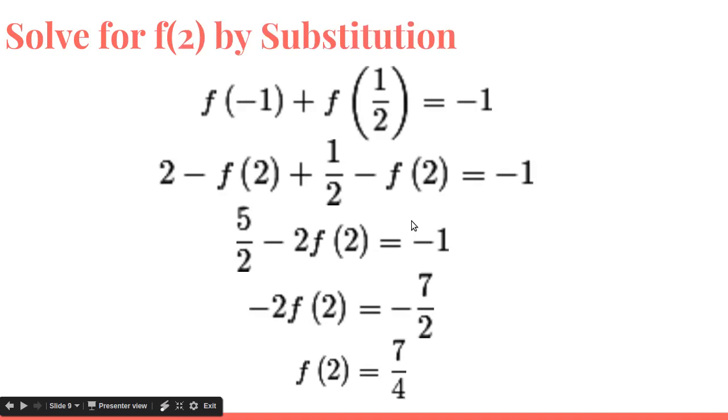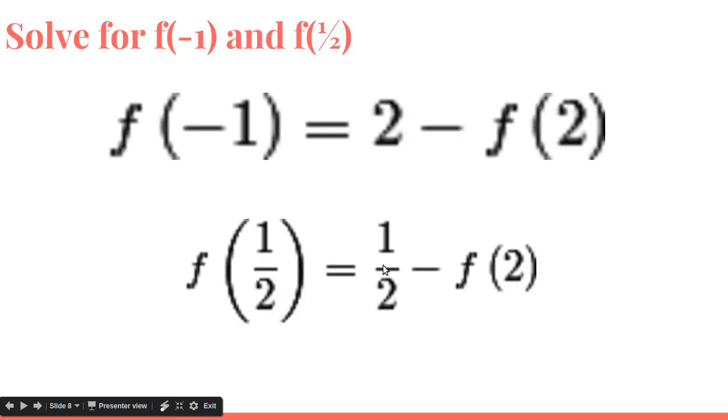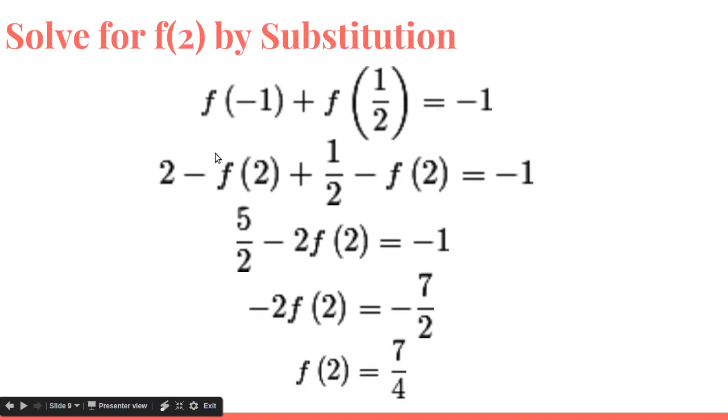So now we go back to the second equation and then we use these equations to substitute in terms of f(2). So now we get 2 minus f(2) plus 1/2 minus f(2) equals -1. Add like terms. 5/2 minus 2f(2) equals -1. Subtract both sides by 5/2. Negative 2f(2) equals -7/2. Divide both sides by -2. The negatives cancel out and you get f(2) equals 7/4. And that is the answer. 7/4.